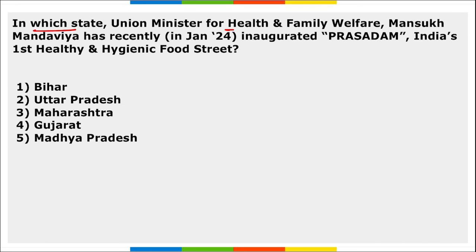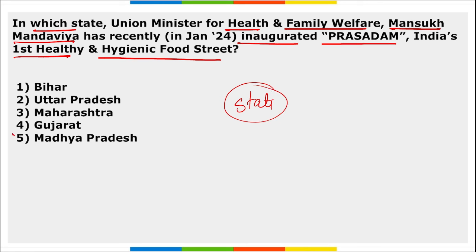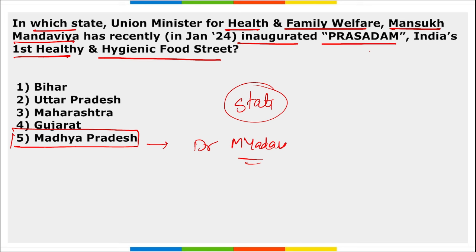Next: in which state has Union Minister of Health Mansukh Mandaviya recently inaugurated 'Prasadham' — India's first healthy and hygienic food street? It was inaugurated in Madhya Pradesh. Chief Minister Dr. Mohan Yadav was also present. Prasadham has a total of 17 shops spread across 939 square meters, offering convenient and culturally rich dining options to devotees of the Mahakaleshwar Temple.